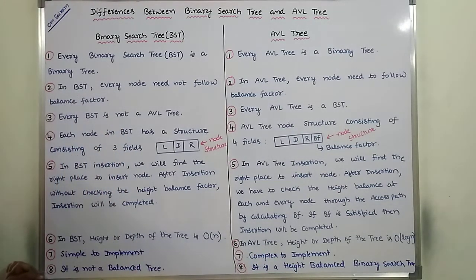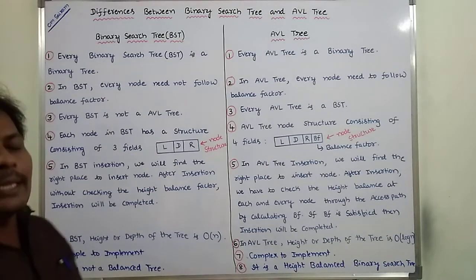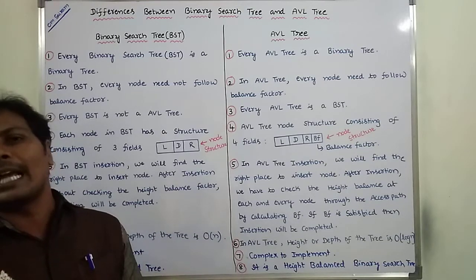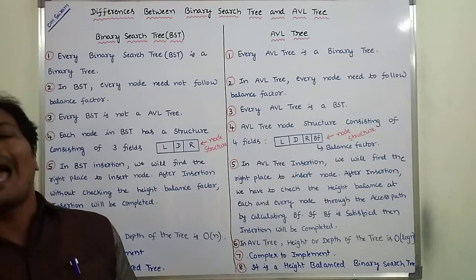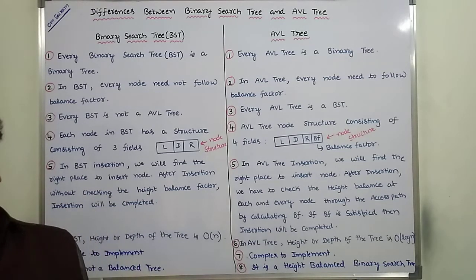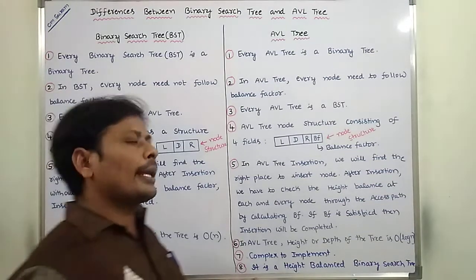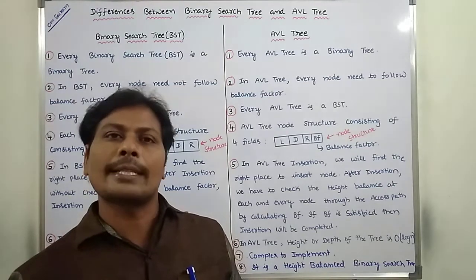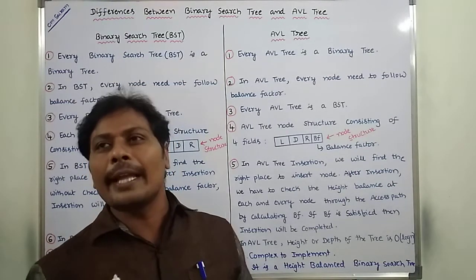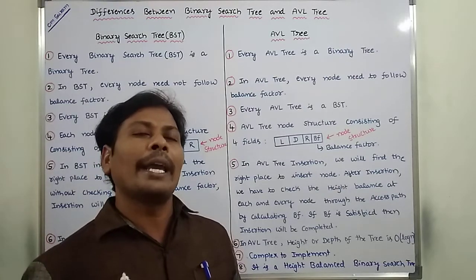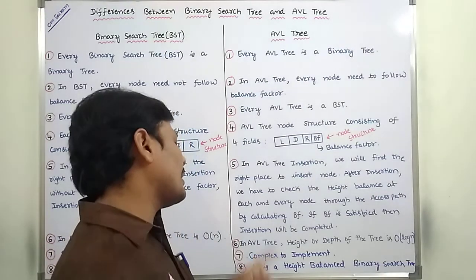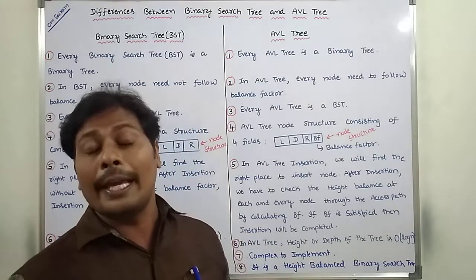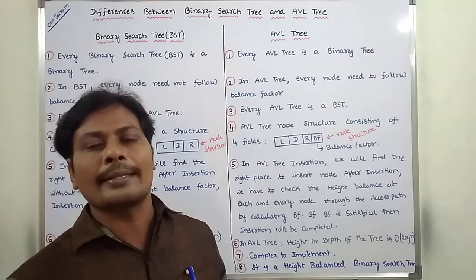Eighth point: binary search tree is not a balanced tree. In BST, inserting or deleting an element can be done, but there is no balancing concept. In the case of AVL tree, we follow the balance factor concept, and the height is balanced using rotations. Because of that reason, the AVL tree is called a height-balanced binary search tree.